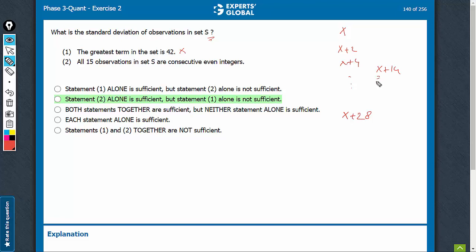The value of x is not important. Whether the terms are 2, 4, 6 until 30, or 1002, 1004 until 1030, the standard deviation for the two are going to be the same, because the number of terms is the same in the two sets and the common difference is the same.